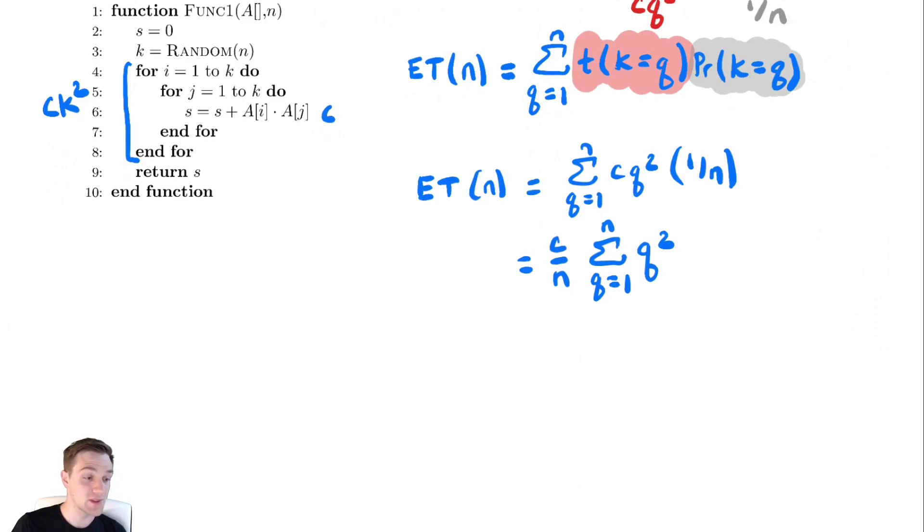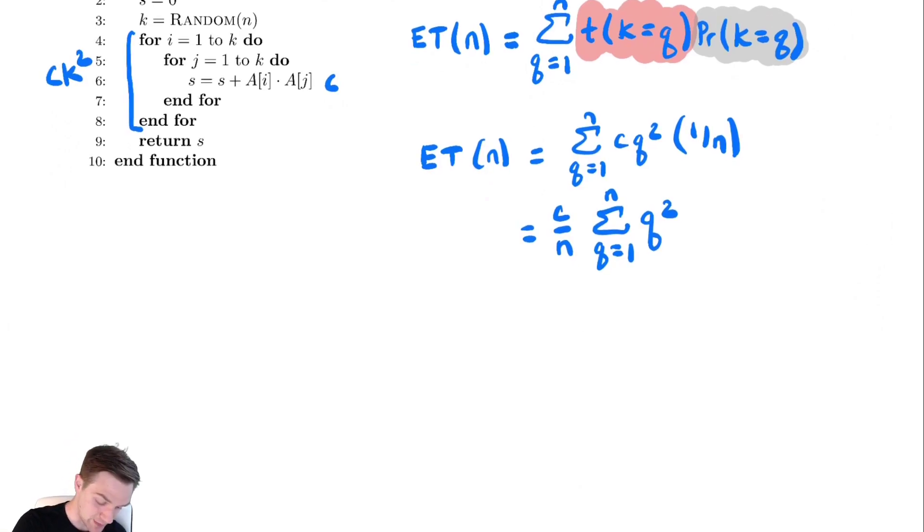There are formulas for this, but why not bound it just to get more practice at it? So let's bound this above. Less than or equal to c over n times the sum from q equals 1 to n of n squared. Plug in the largest value that q would take. This equals c over n times, there's n copies of n squared. Get some nice cancellation and we get cn squared.